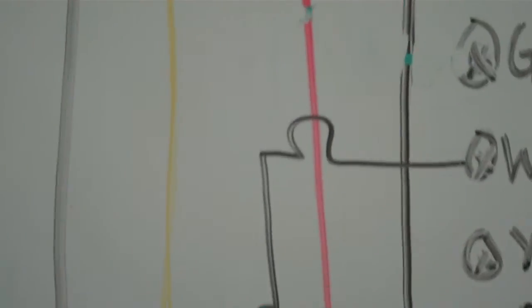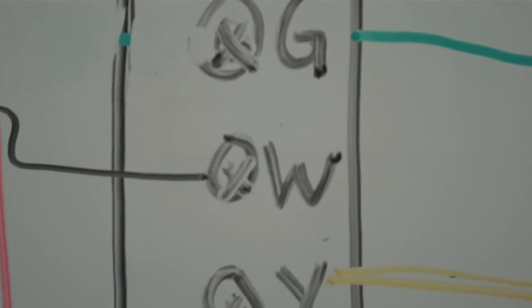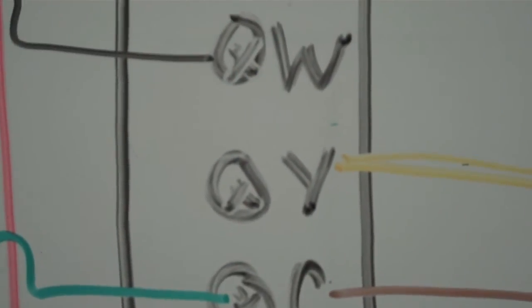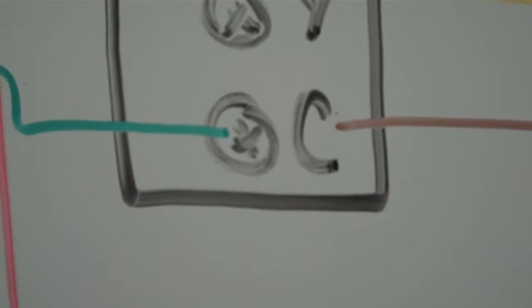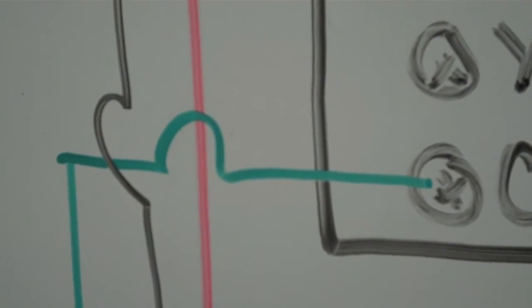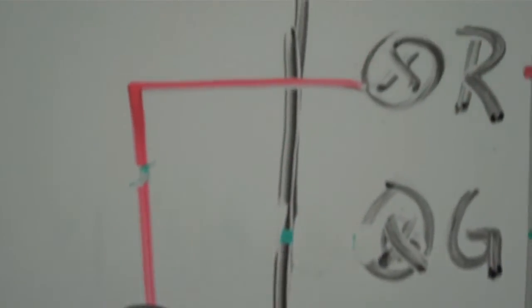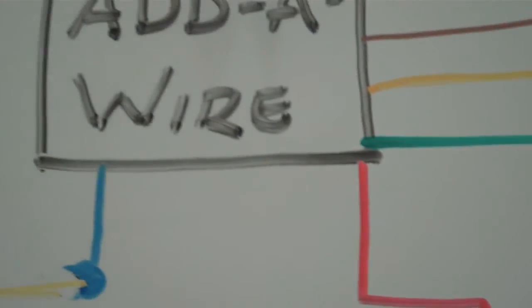So when we come over here, red remained the same, green is coming from our module, white is remaining the same, yellow is coming from our module, common is coming from our module, and the green that was formerly the fan. Red comes from the thermostat, back to the red here on the terminal board, and back up to the add-a-wire module.